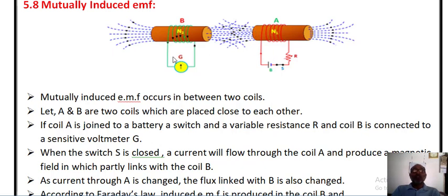Coil B is connected to a sensitive galvanometer, which is used to detect whether an EMF is induced in the coil or not.